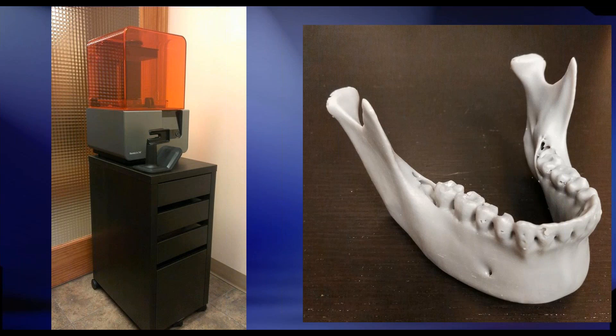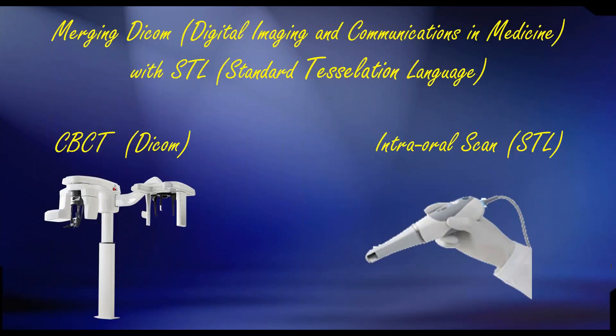This newer printer — a Formlabs — allows us to do mouth guards, orthodontic aligners, and pretty soon digital dentures and temporary crowns. This is the one we currently use most in the office. Relatively low cost — you can get into one of these printers for about $3,500 and print a model for just a few dollars by exporting an STL file out of a CBCT image.